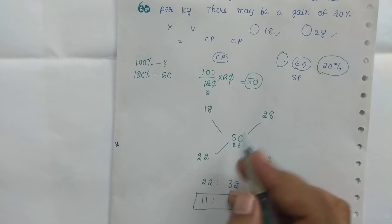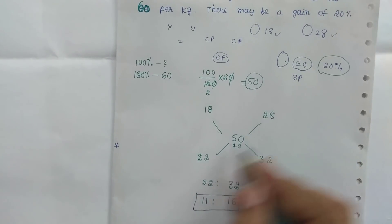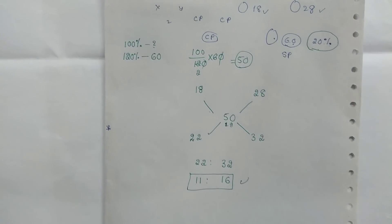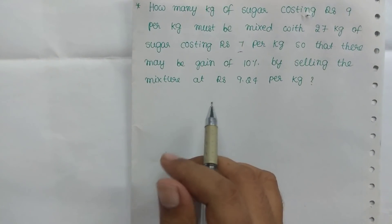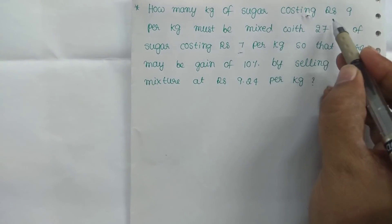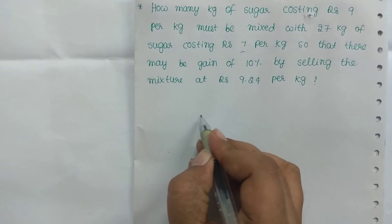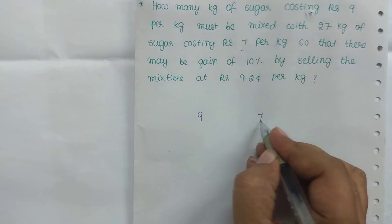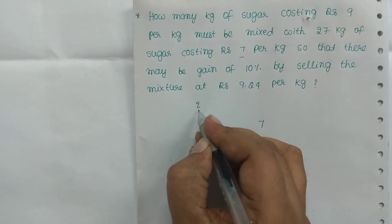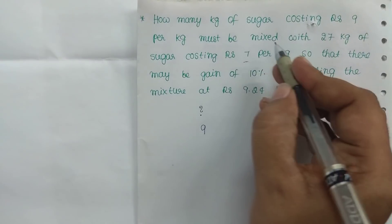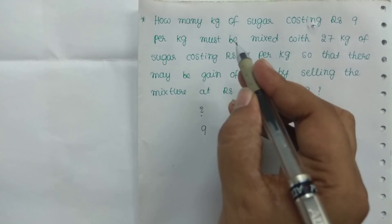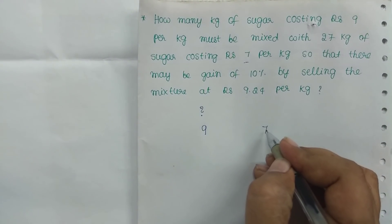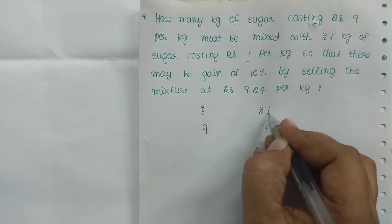4 times per cup of tea, 6 times per cup of tea is equal, and 10 times per cup of tea is equal. How many kgs of sugar costing Rs. 9 per kg must be mixed with 27 kgs of sugar costing Rs. 7 per kg?